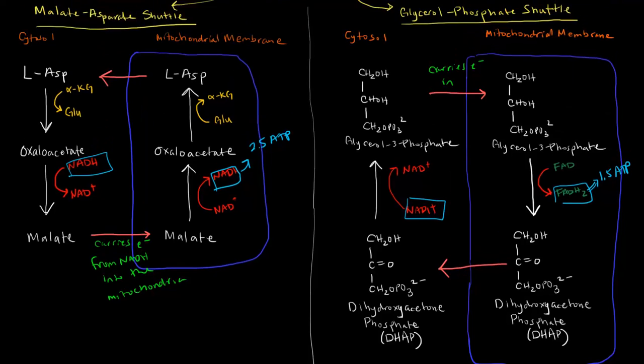So clearly, the malate-aspartate shuttle is the more efficient one, right? This is more efficient, more energy efficient. This is actually found in mammalian kidneys, the liver, and the heart.